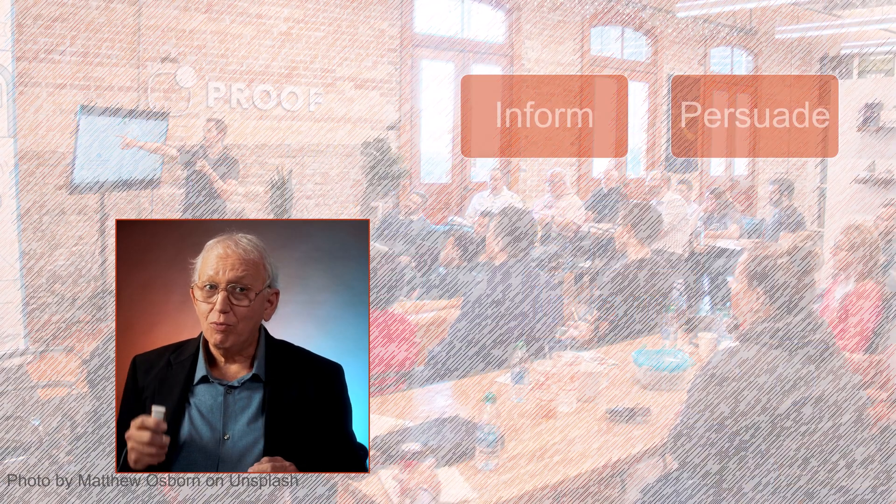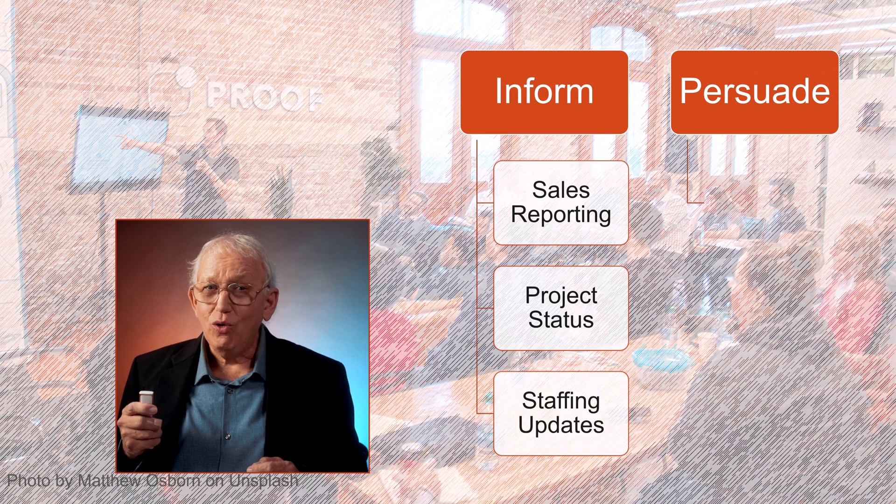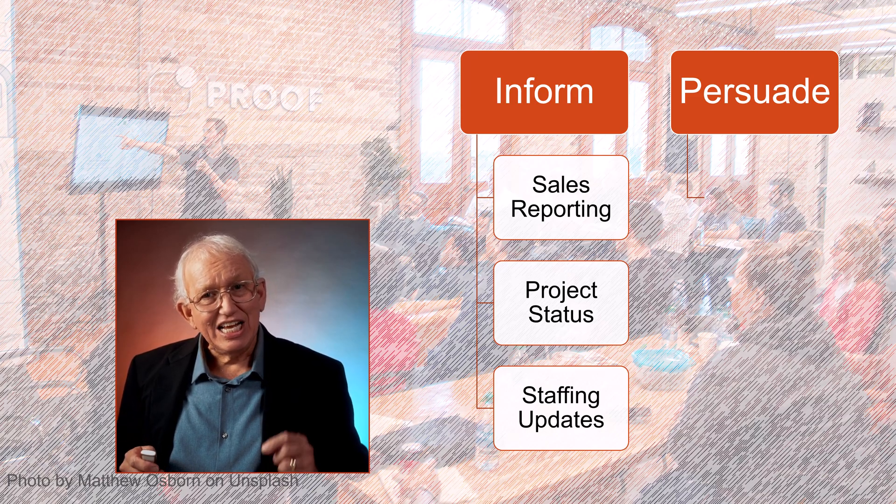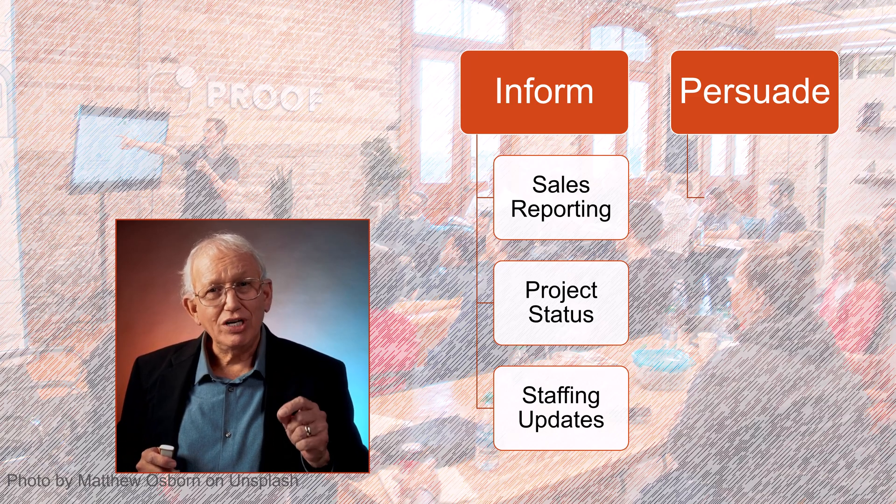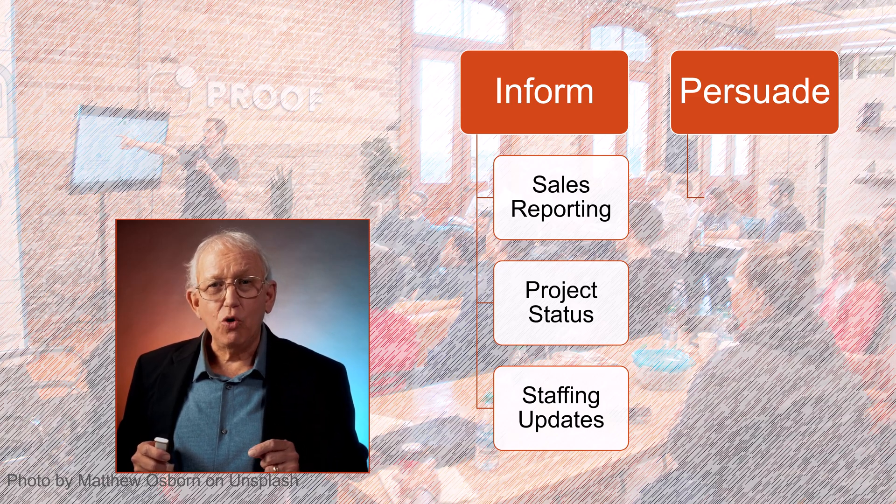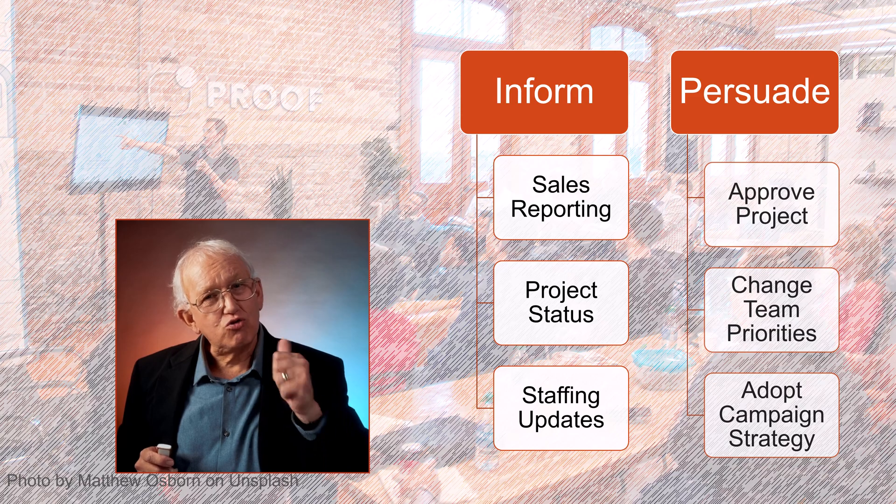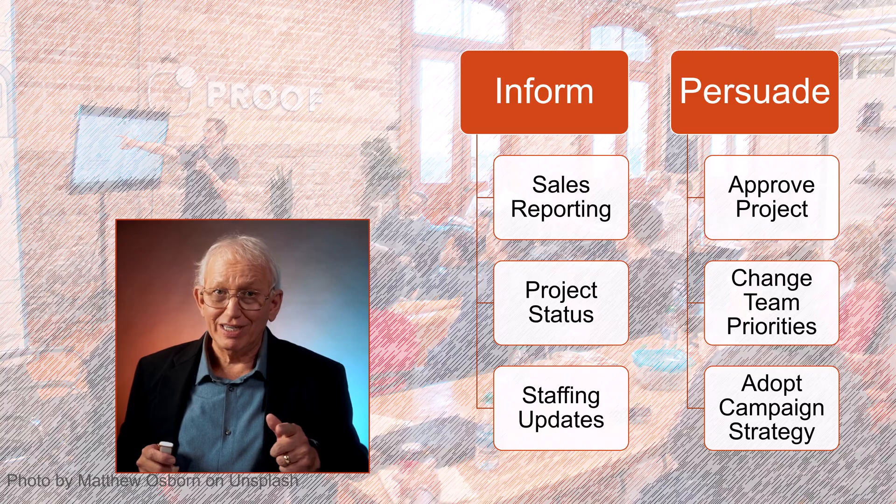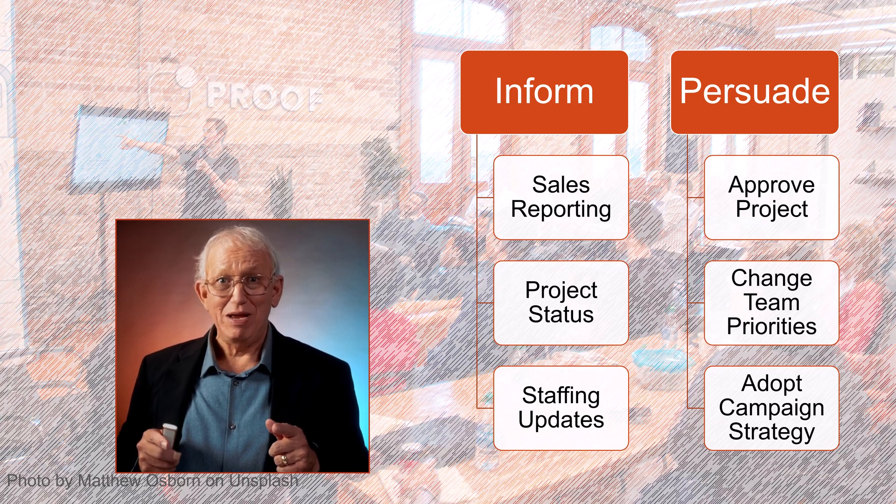For an informed presentation, your goal is to convey a specific message. At the end, does your audience know more as you reach the last slide? And for persuade, your goal is to get the attendees to agree with your point of view. Specifically, you want their approval, or at least your boss or maybe your boss's to agree with your request.